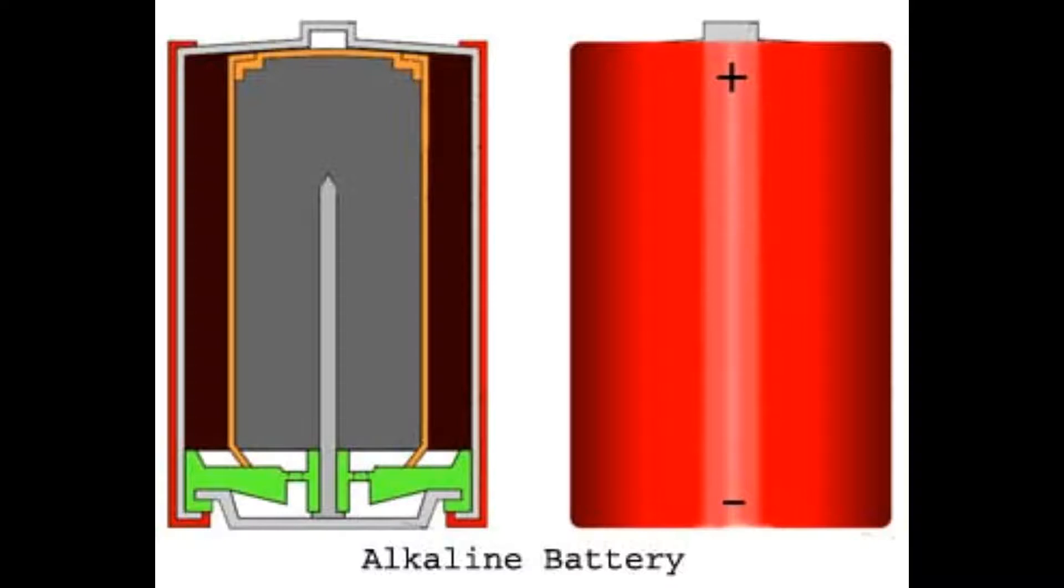The cathode is generally manganese dioxide, which is form-fitted to the inside of the steel battery case. Inside that is a piece of paper which separates the manganese dioxide from the anode, zinc, both of which are soaked in an electrolyte solution. The electrolyte solution is a salt dissolved in a solvent, which allows the electrons to flow from positive to negative.